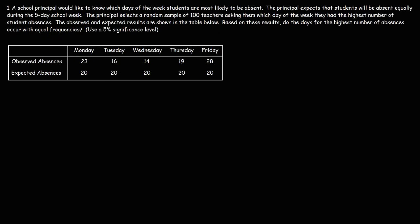The first thing we need to do is determine the null hypothesis and the alternative hypothesis. So for this problem, the null hypothesis is that the absent days occur with equal frequencies. That is, they fit a uniform distribution. The alternative hypothesis is that the absent days do not occur with equal frequencies, or rather, they occur with unequal frequencies. Or you could say that they don't fit a uniform distribution.